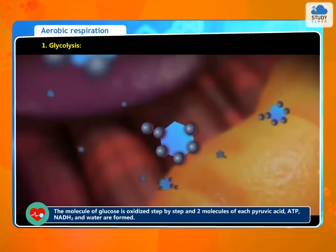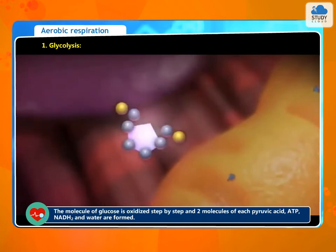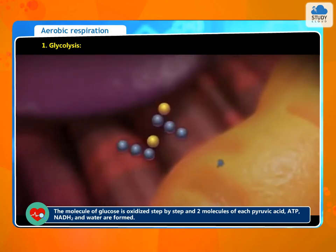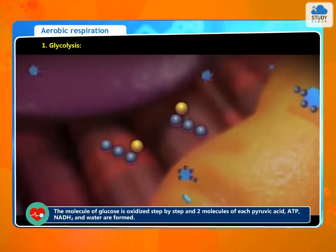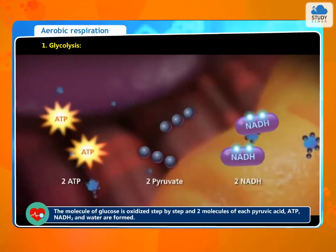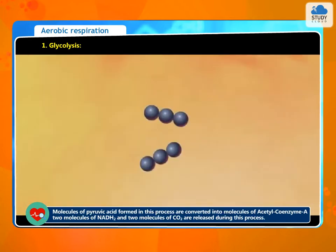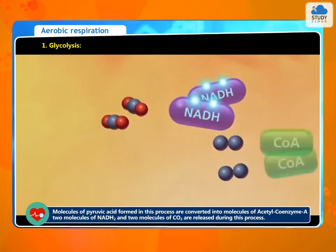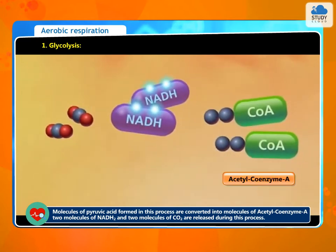The molecule of glucose is oxidized step by step, and two molecules each of pyruvic acid, ATP, NADH2, and water are formed.